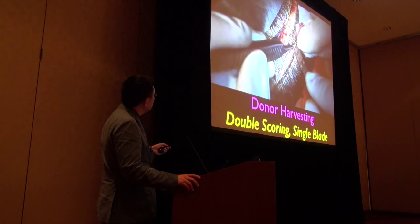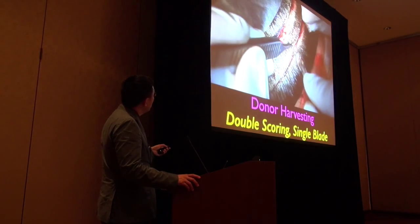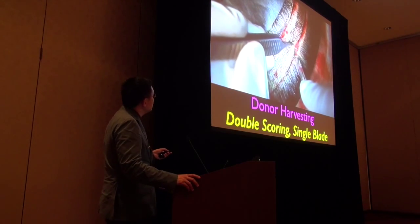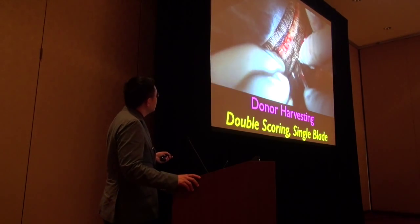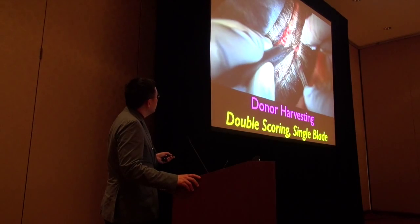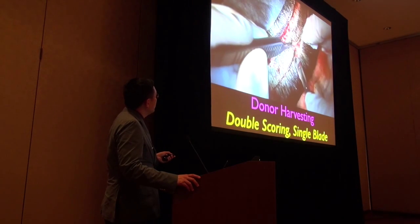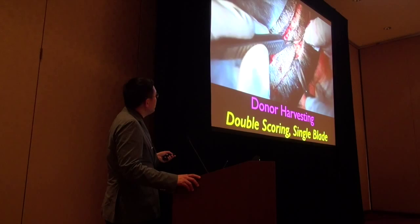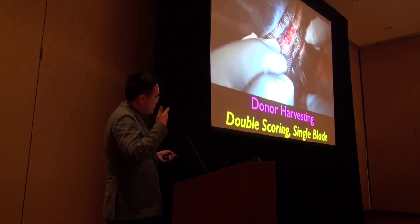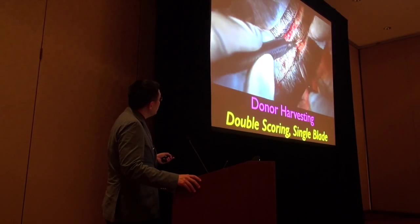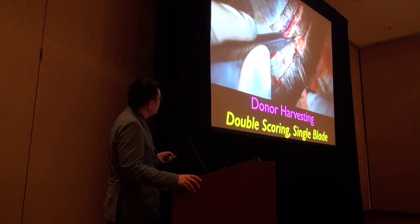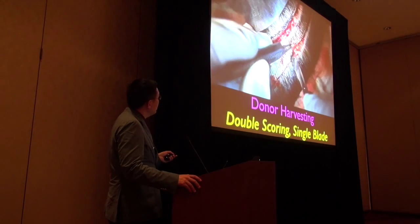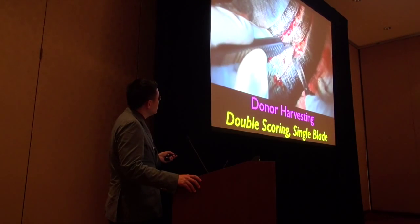I go very slowly to harvest. This is a process where I'm constantly looking for transection and making small adjustments. You don't want to rush this — a lot of people just fly through it. You want to slowly look at the depth, the angle, make adjustments, wipe for any little bleeding. You should have very minimal bleeding and minimal transection.